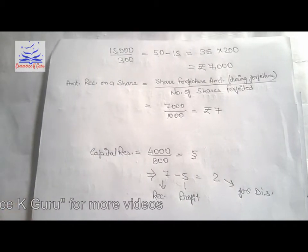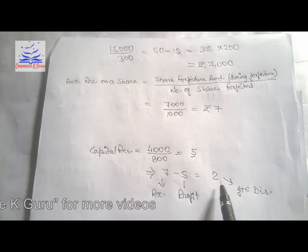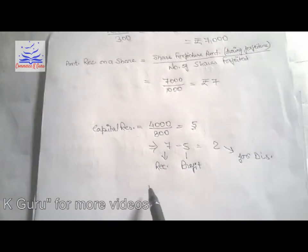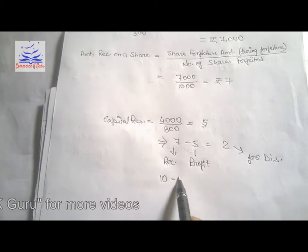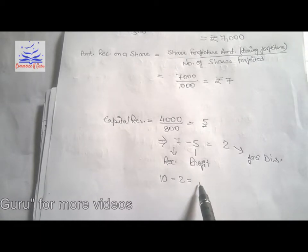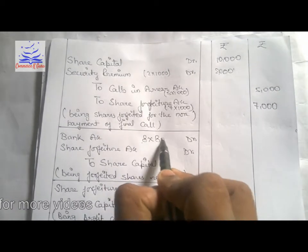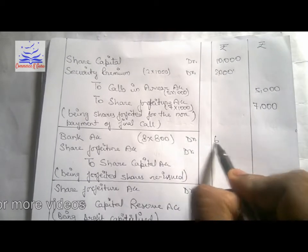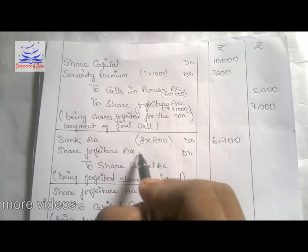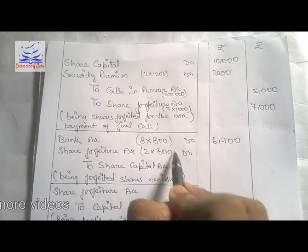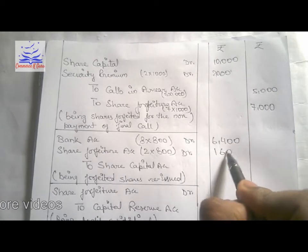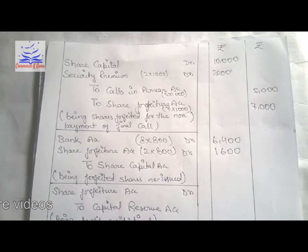Since the shares are fully paid at ₹10 with a ₹2 discount, the reissue price will be ₹8 per share. For 800 shares reissued at ₹8, the bank amount is ₹6,400. The share forfeiture used for discount is ₹2 into 800, which equals ₹1,600, and the capital reserve transferred will be ₹4,000.